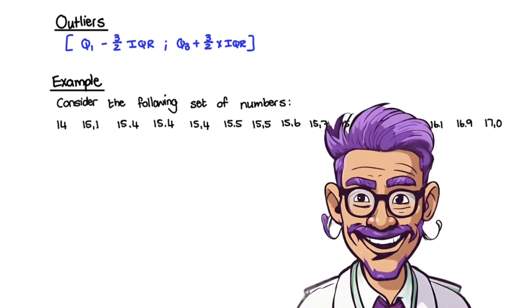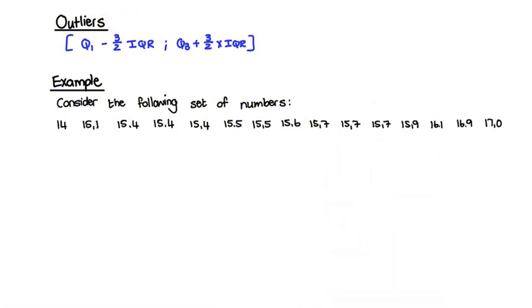Welcome to Mathenetic. We are busy revising statistics for paper 2 for grade 12 mathematics. And in this video, we will focus on outliers. Now in order to discuss outliers, we will make use of the following example with our 15 data points. So this is a set of numbers.